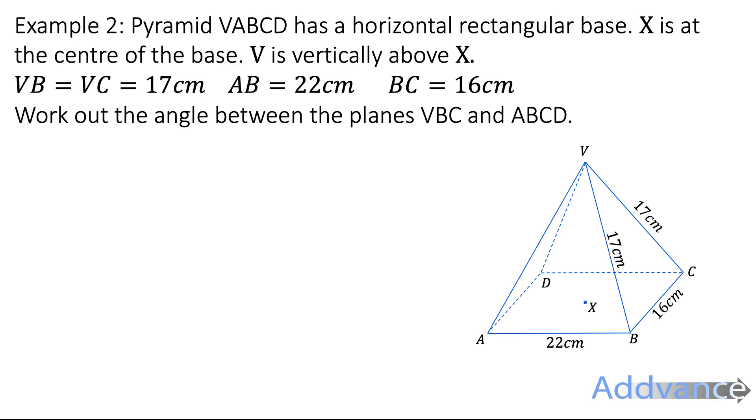Example 2, pyramid VABCD has a horizontal rectangle base. X is at the centre of the base. V is directly above X. So we've got V is the peak of the pyramid, and that's directly above X in the middle of the base. Work out the angle between the planes VBC and ABCD. So this is the plane VBC highlighted in green, and ABCD is the base, and I've highlighted that in orange. So I'm looking for the angle between those, which looks like this. And so we can see that we're after this red angle here.